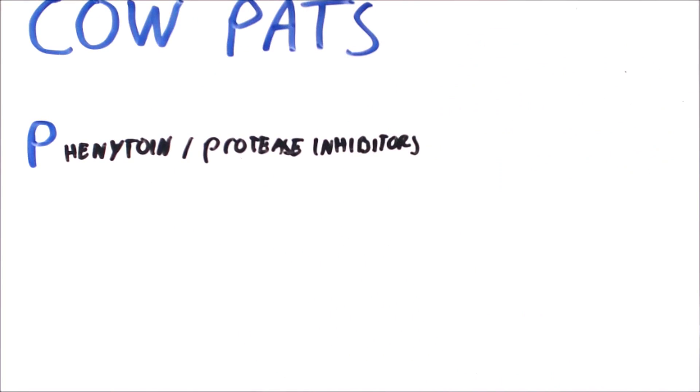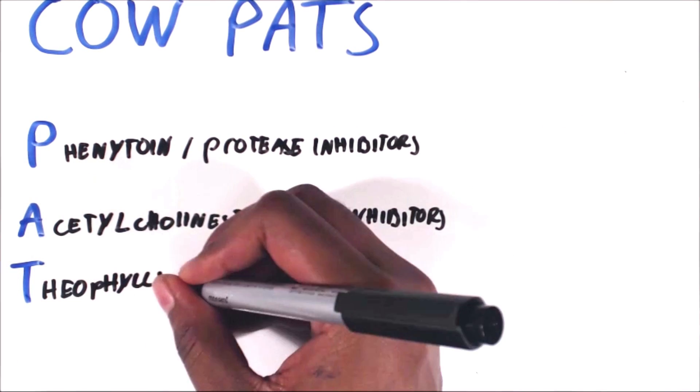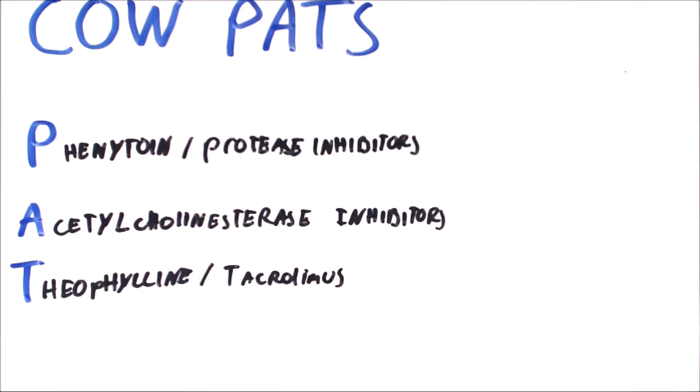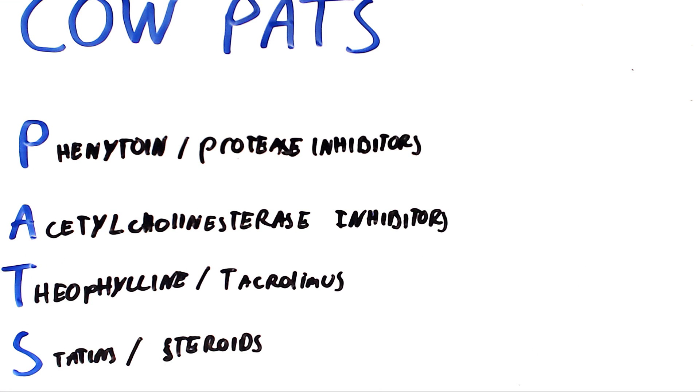The F stands for phenytoin and protease inhibitors. The A is for acetylcholinesterase inhibitors. The T stands for theophylline and tacrolimus, and the S stands for statins and steroids.